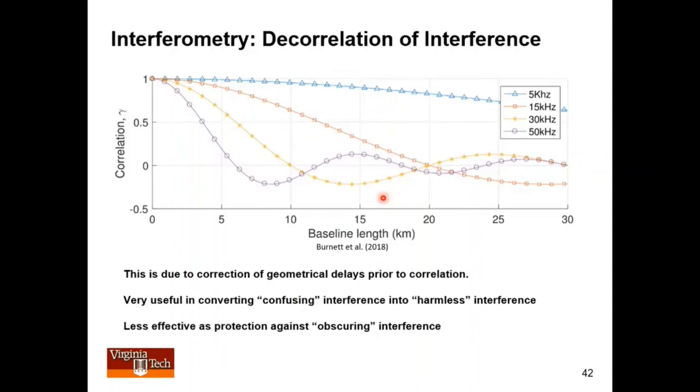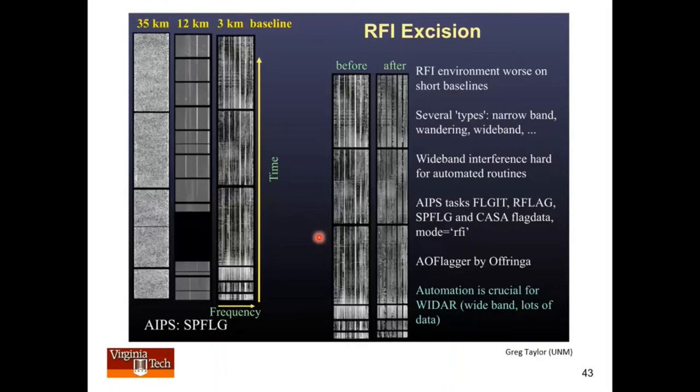On the other hand, it really has no effect on obscuring interference because typically this effect is not enough to push something which is obscuring into the confusing range or harmless range. Typically, it just makes it into other confusing stuff. Here's a great example of that. So this is a slide I stole from Greg Taylor, showing these are three baselines measured at the VLA. So each baseline is a correlation, and each one of those correlations has a dynamic spectrum. Here's frequency and here's time. So what you see on a baseline which is 35 kilometers long, one of the longest baselines, is beautiful. It just looks nice and noise-like, which is what you want to see. If you go to three kilometers at the same time, a very short baseline in the same array, it looks like hell. It's got all this interference and stuff in it. They both saw the same environment, but here, this is a short baseline, and this is a long baseline. And that decorrelation due to baseline length is really powerful.